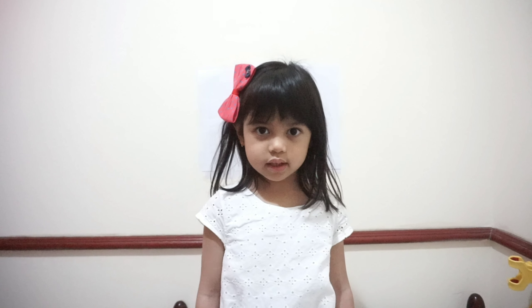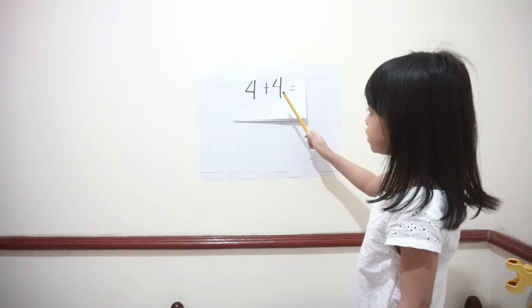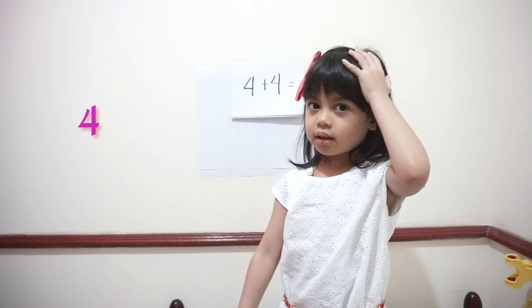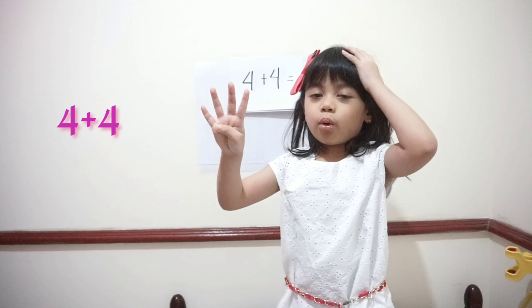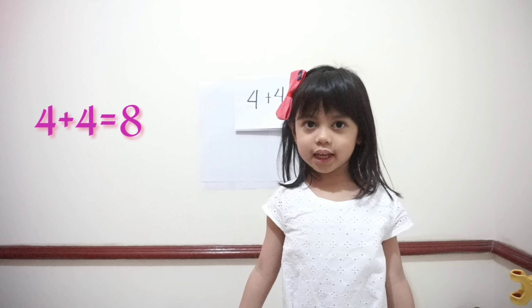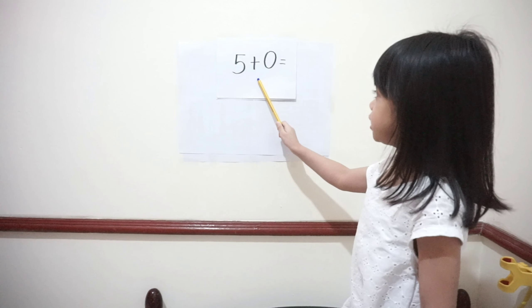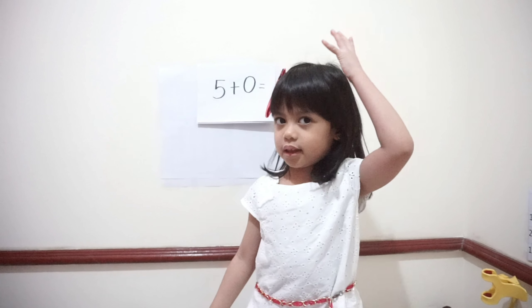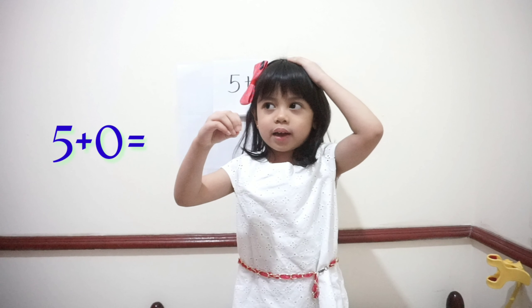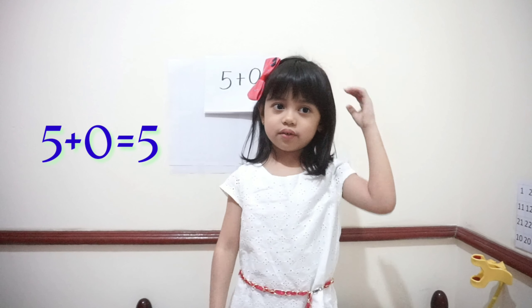Next question is 4 plus 4. 4 in the head plus 4. 4, 5, 6, 7, 8. So it's 8. Now we have 5 plus 0. 5 in the head plus 0. 5 — so the answer is 5.